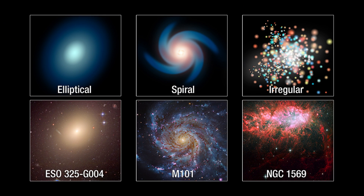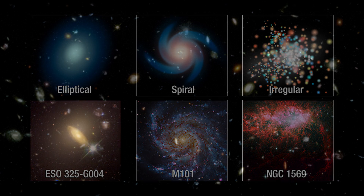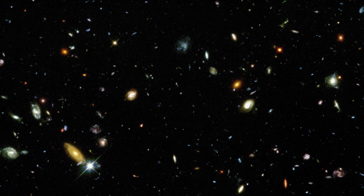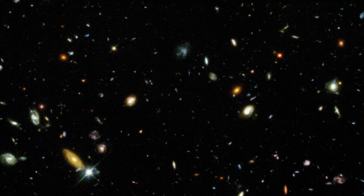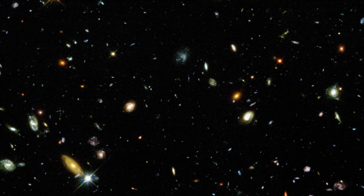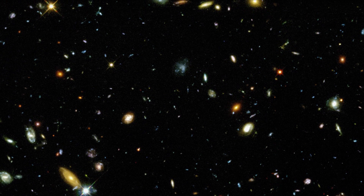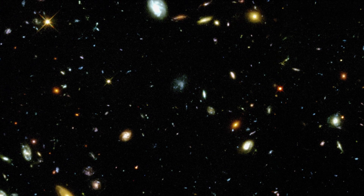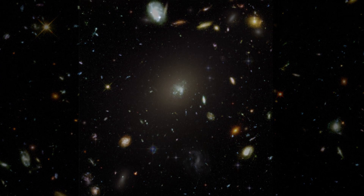How many types of galaxies are there? Astronomers classify galaxies into three major categories: elliptical, spiral, and irregular. These galaxies span a wide range of sizes, from dwarf galaxies containing as few as 100 million stars, to giant galaxies with more than a trillion stars.